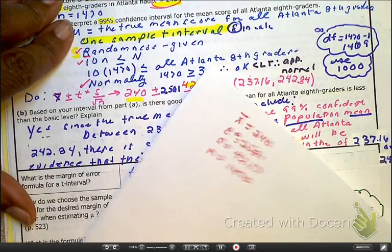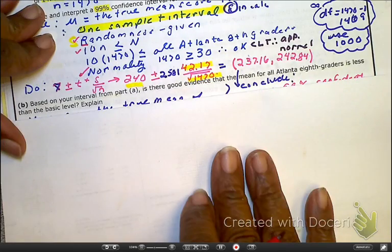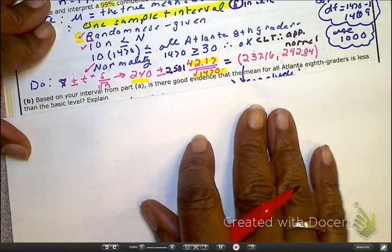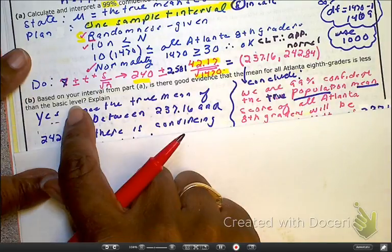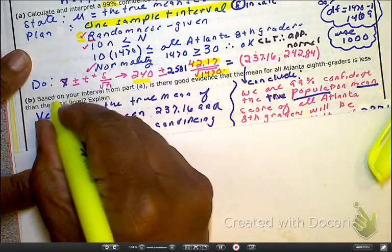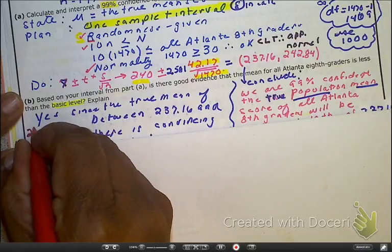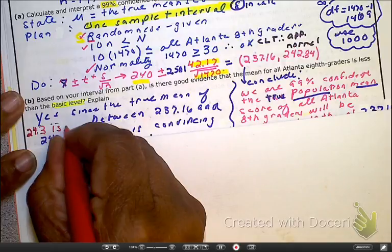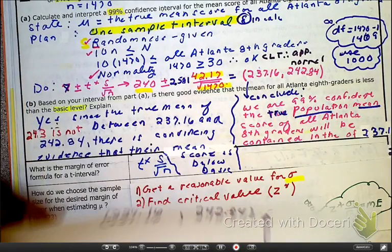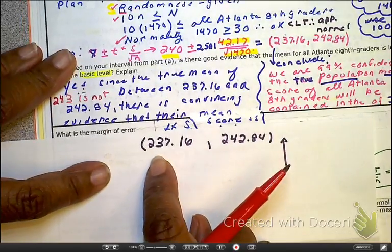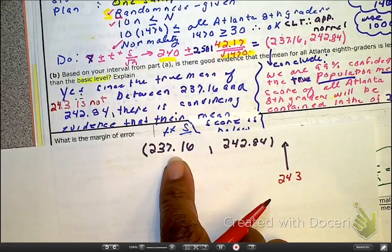But now, let's look at our question B. And as we look at question B, the question is, is there evidence that the mean of all the Atlanta eighth graders is less than the basic level? And the answer to this is yes, it is less than basic. And the reason it's less than basic is because the true mean value of 243, let me put this in here, of 243, is not between the 237 and the 242. So let's put this in perspective. It makes sense. Here's the interval of the group that you have. 237, 242, your 243 is right here. These numbers are below. So yes, there is convincing evidence that their score is below basic.